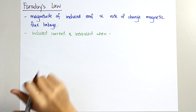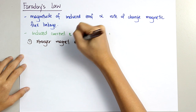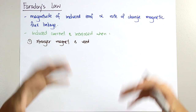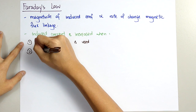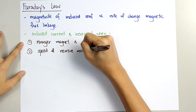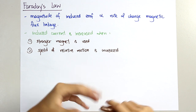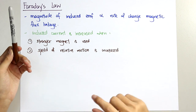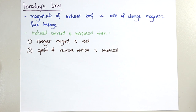The induced current is increased under two conditions. Number one: a stronger magnet is used. When the magnet is stronger, the magnetic flux linkage will be greater, which is why the induced current increases. Number two: the speed of relative motion is increased. This relative motion refers to cutting through flux — when you move the magnet faster, it causes a greater rate of change of magnetic flux linkage, and therefore the induced current is increased.